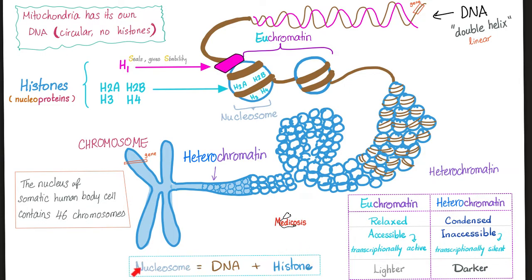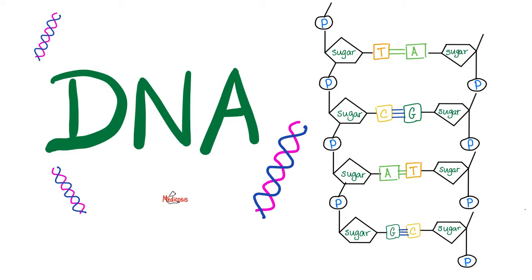Which histones are part of the nucleosome? H2A, H2B, H3, H4. H, of course, stands for histone. And your DNA is a double helix, most likely right-handed double helix. What's a gene? A gene is a piece of your DNA. DNA, sugar, phosphate group, nitrogenous bases. What kind of sugar? Deoxyribose. What kind of bases? Adenine, guanine, cytosine, thymine.